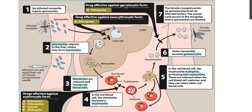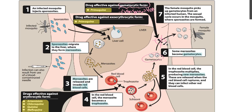The drugs acting against the gametocyte form — the gametocyte is formed after the merozoites destroy the red blood cells and enter circulation. At that point the merozoite has two fates: either to infect another red blood cell, or to form a gametocyte to be taken up by a female mosquito. Drugs that inhibit gametocyte formation prevent the transmission of the disease.